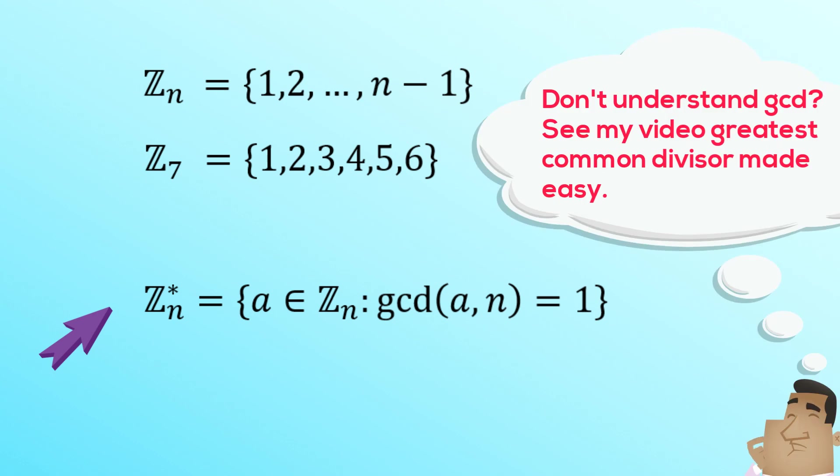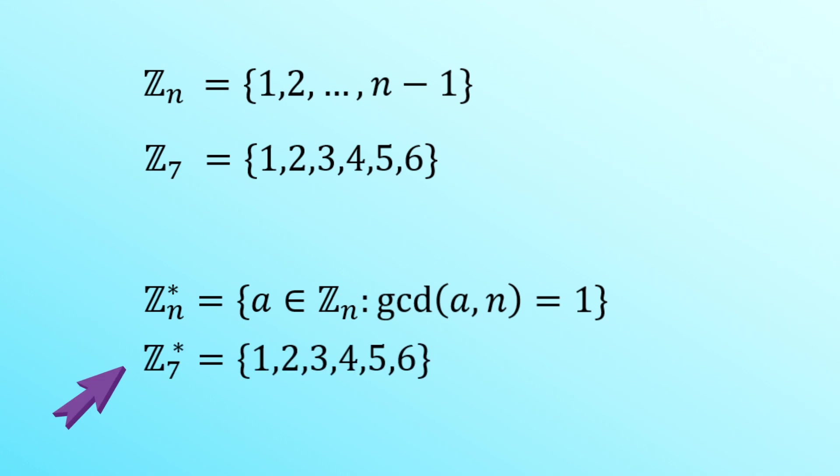So let's see how this works. In the case of Z star 7, well we start with the numbers 1 through 6. Now all of these numbers have a GCD with 7 equal to 1. That's what happens because 7 is a prime. So Z star 7 is just the same set, the set 1 through to 6.